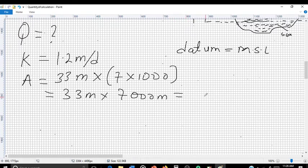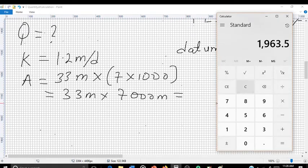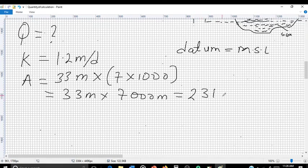We are going to get 33 meters multiplied by 7,000 meters, which equals 231,000 meters squared. Of course it is in meters squared, because it is an area.